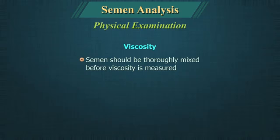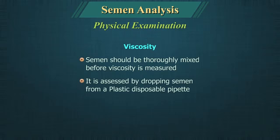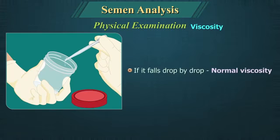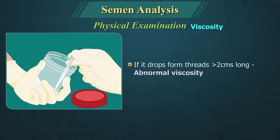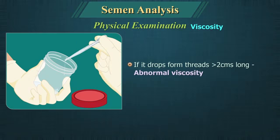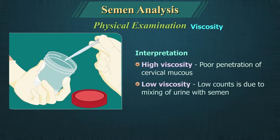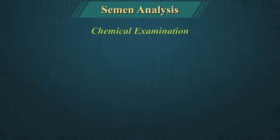Viscosity: The semen should be thoroughly mixed before viscosity is measured. It is assessed by dropping semen from a plastic disposable pipette. If it falls drop by drop, the viscosity is normal. Abnormal viscosity is when drops form threads more than 2 cm long. High viscosity may be associated with poor penetration of cervical mucus, and low viscosity may be associated with low counts.